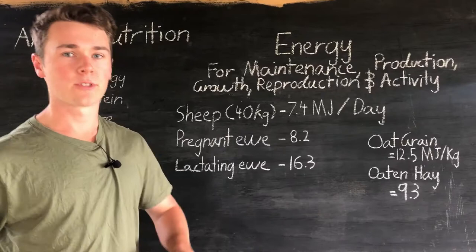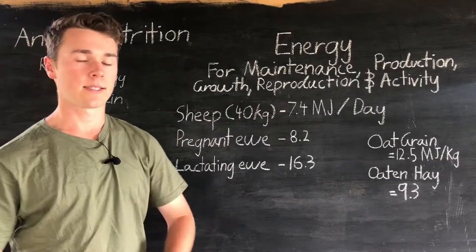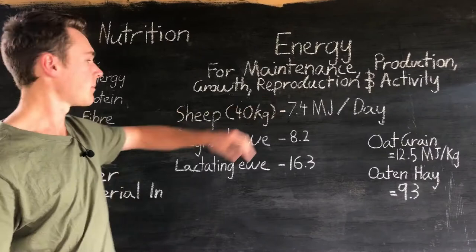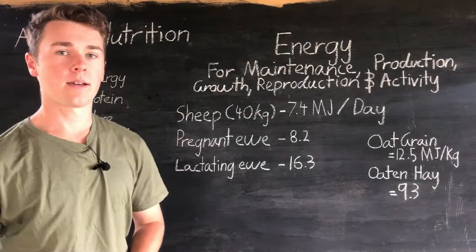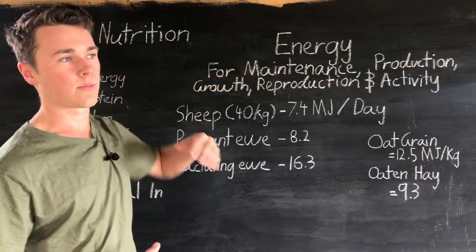For reference, a standard beef steer has an energy requirement of 27 megajoules per day — that's almost four times that of a standard sheep. So effectively you could say you can have four sheep or one beef steer, and this is the kind of thing we can use when choosing our enterprises based on their nutritional requirements and what our land can provide.